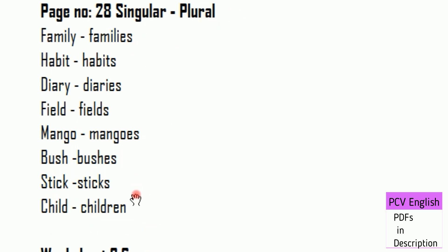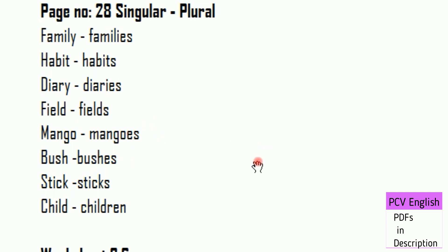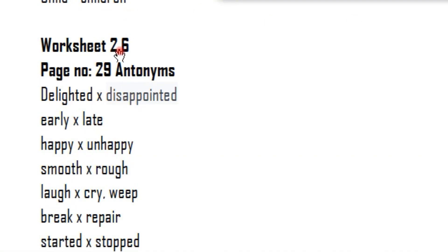For founding Y, drop Y and add I, E, S. Now in page number 29, Worksheet 2.6 — Antonyms and opposite words.